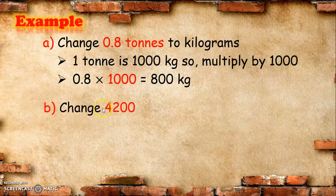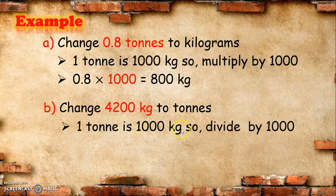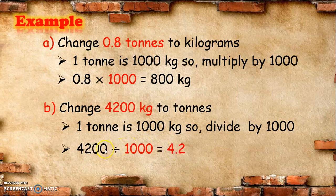Let us have another one. Change 4,200 kilograms into tons. We know that 1 ton is equal to 1,000 kilograms. Because we want to change kilograms into tons, we divide by 1,000. So, 4,200 divided by 1,000 is equal to 4.2 tons. In other words, 4,200 kilograms is equal to 4.2 tons.